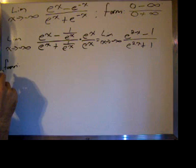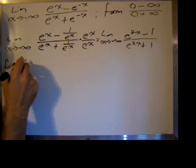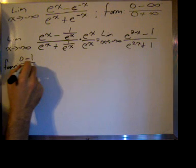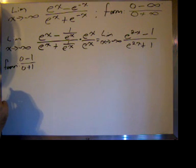And we get 0 minus 1 over 0 plus 1. Well that's not an indeterminate form.